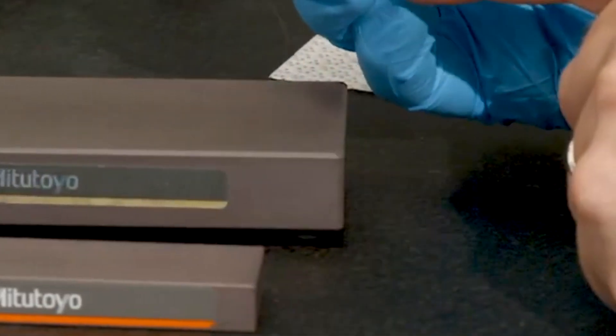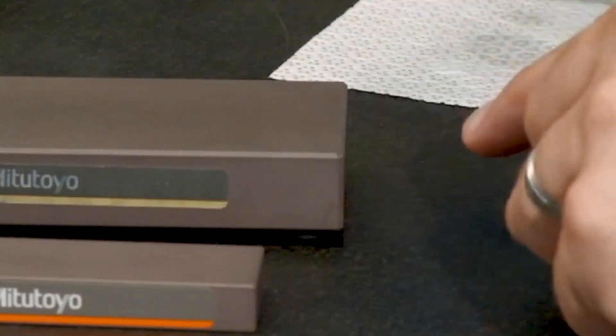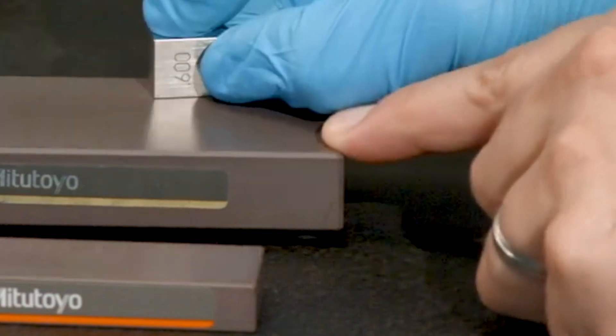We're not changing the length of the block. We're just removing any high spots, particularly on the edges. And no, you don't have to buy a Mitutoyo Serastone, but they do work well.